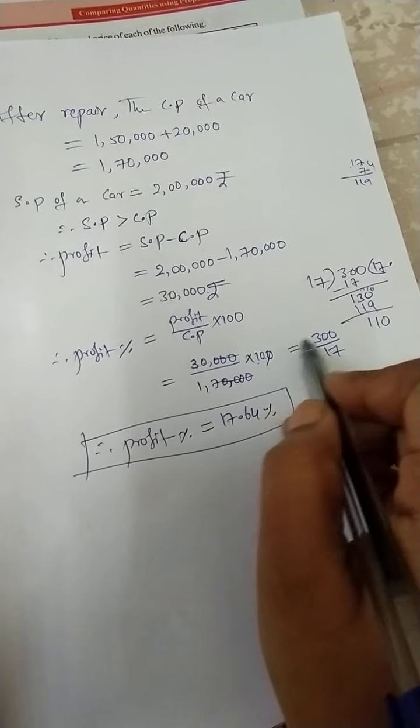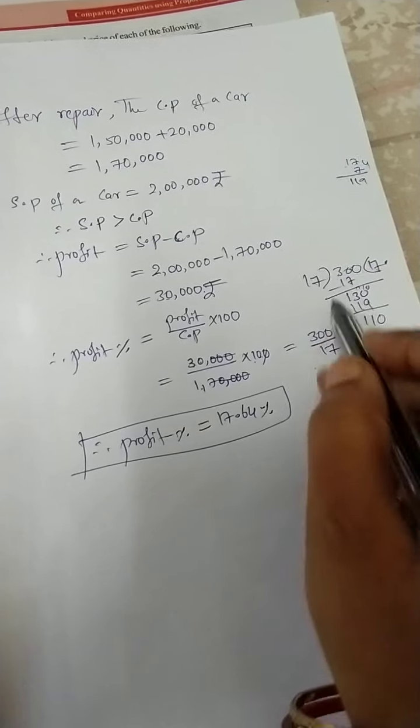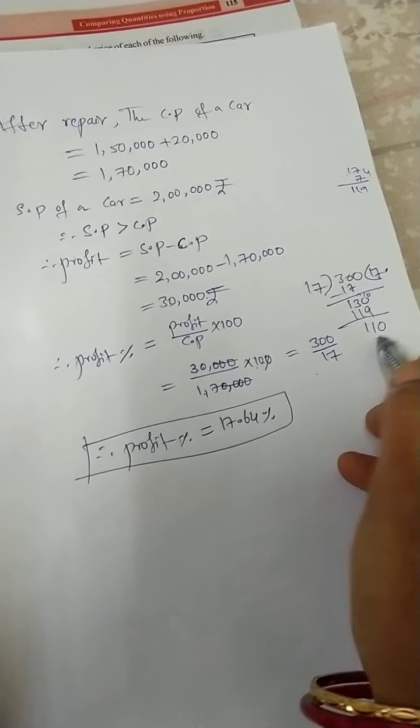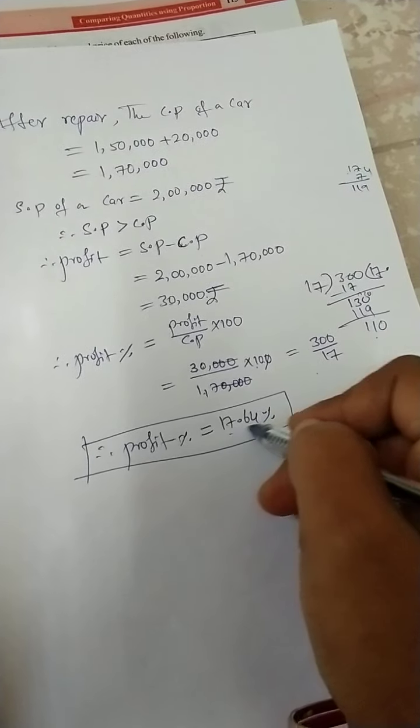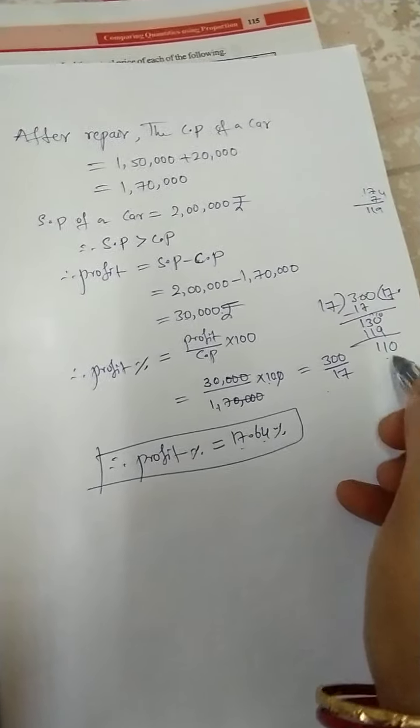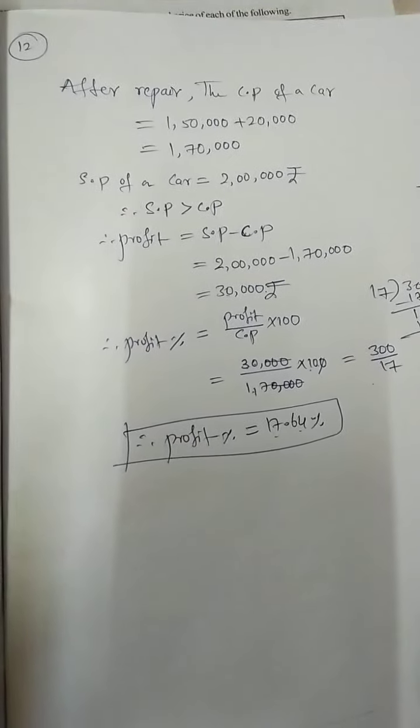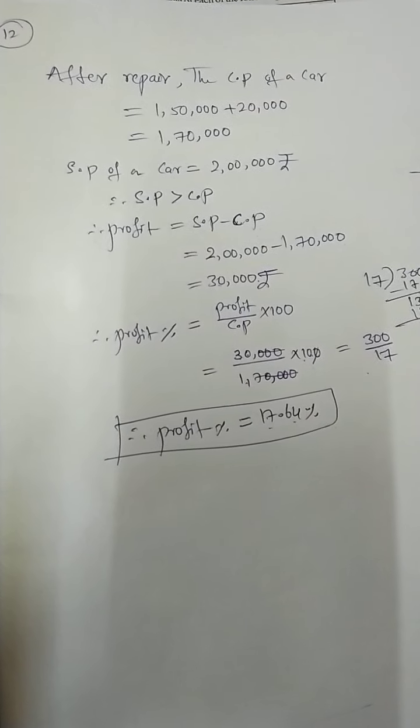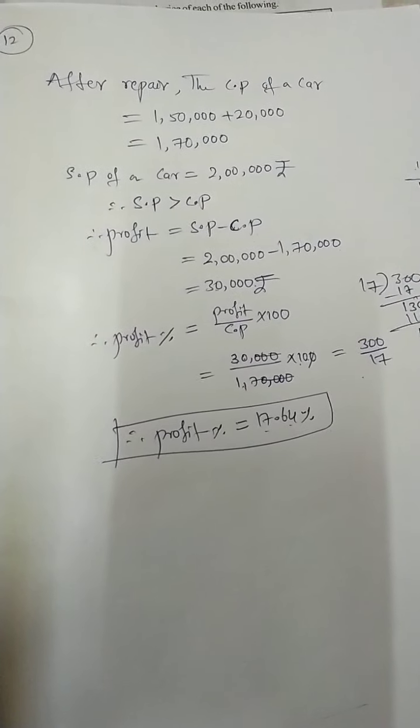If you do the division, you will get 17.64 percent. I hope you understood. Take the screenshot and you can write in your notebook. Thank you.